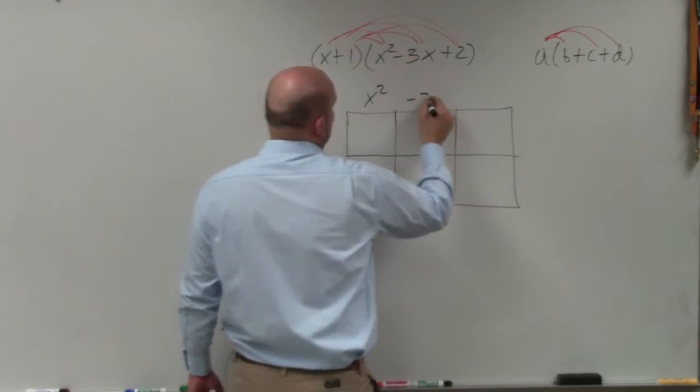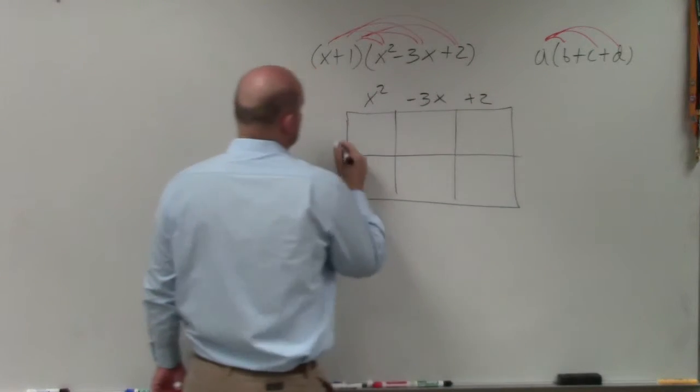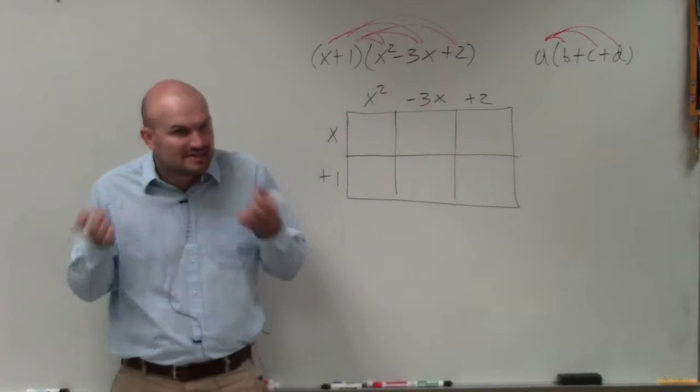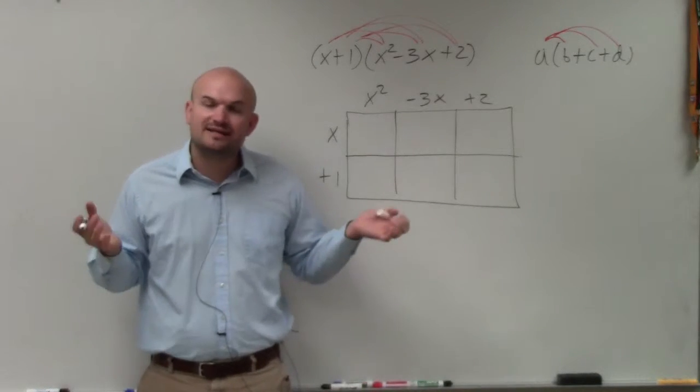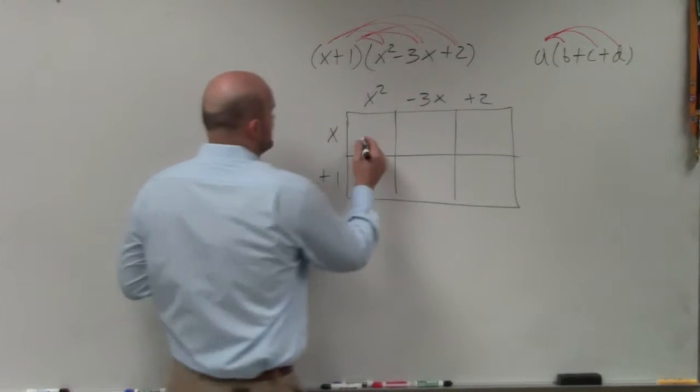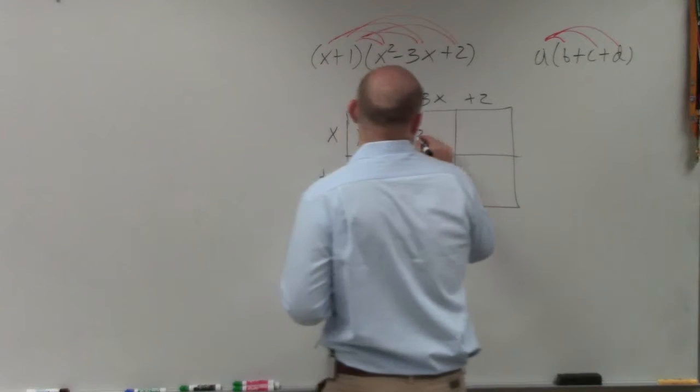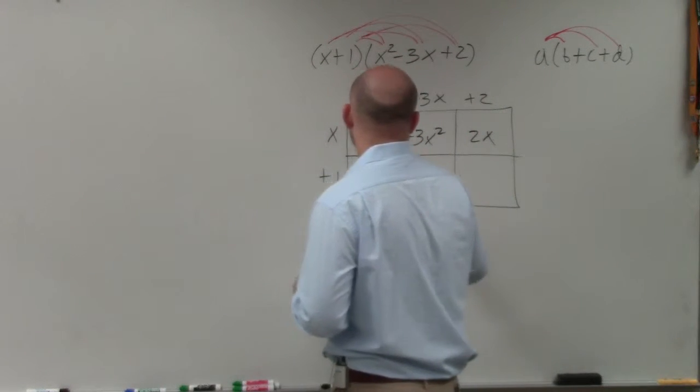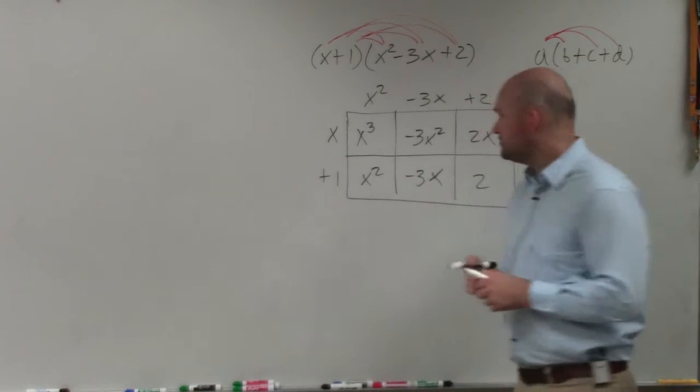Then you just do x squared minus 3x plus 2x plus 1. Now, since I've broken it down into little areas, I just need to find the area of each little box. So I have x cubed, negative 3x squared, 2x, x squared, negative 3x, positive 2.